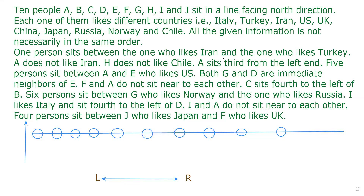Hello everyone, welcome back to the channel. Today we are going to solve another problem on seating arrangement. Study the following information very carefully and answer the questions accordingly. Before going to see the solution from this video, try to solve the problem by yourself. Today's question: 10 people A, B, C, D, E, F, G, H, I, J sit in a line facing the north direction.